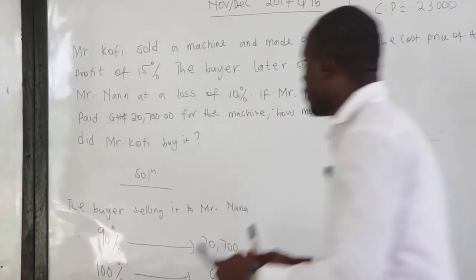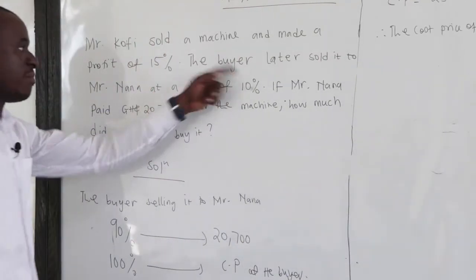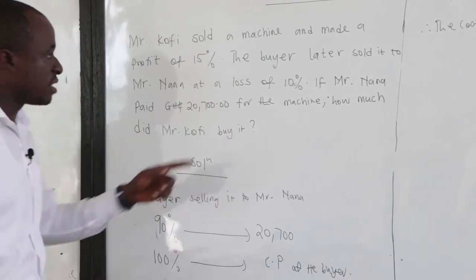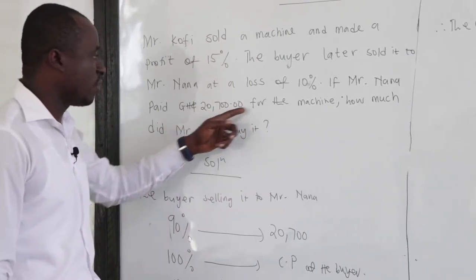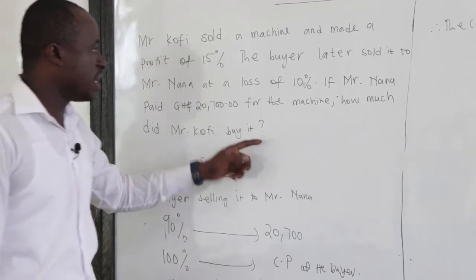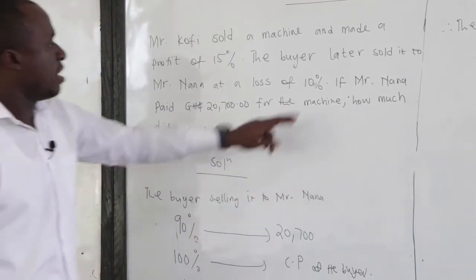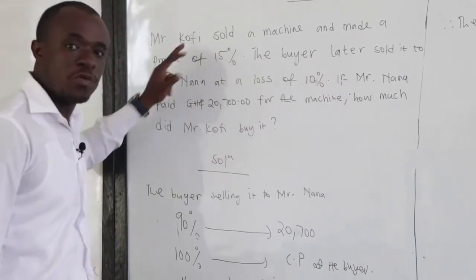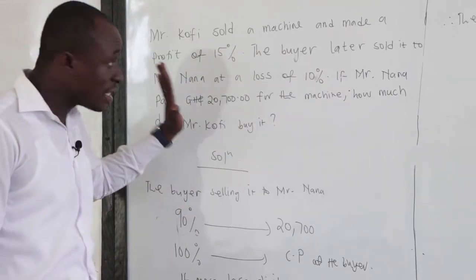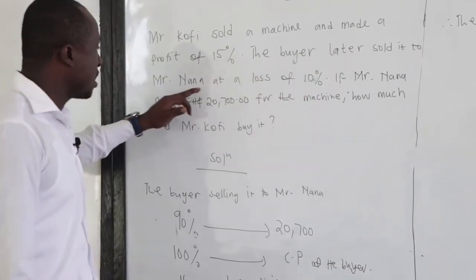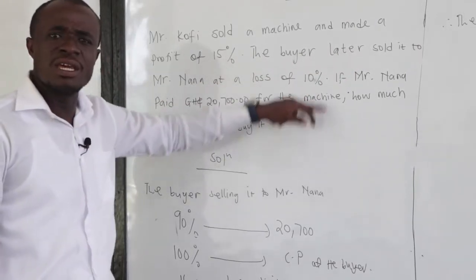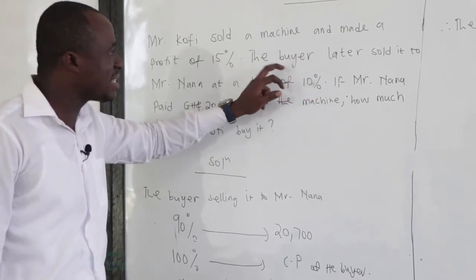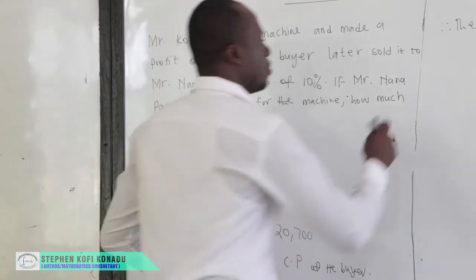Let's look at the question carefully. Mr. Coffee sold a machine and made a profit of 15%. The buyer later sold it to Mr. Nana at a loss of 10%. If Mr. Nana paid 20,700 for the machine, how much did Mr. Coffee buy it? Clearly, the cost price of the buyer is the selling price of Mr. Coffee.